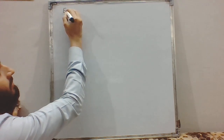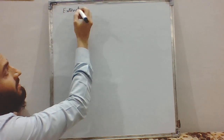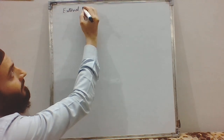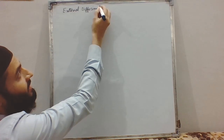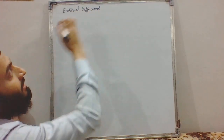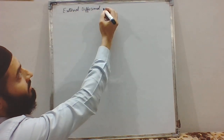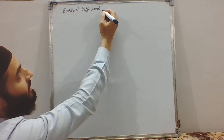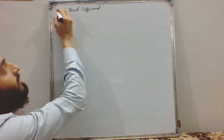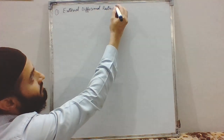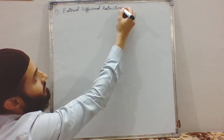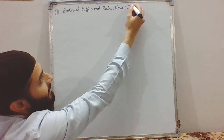Hello everyone. Today we will be studying about external diffusion restrictions. As discussed in our previous lectures, in the last lecture we discussed about the partition effects. Now the second micro-environmental effect that we are going to deal with is mass transfer limitations, and among these, the first one is external diffusional restrictions, which we can abbreviate as EDR.